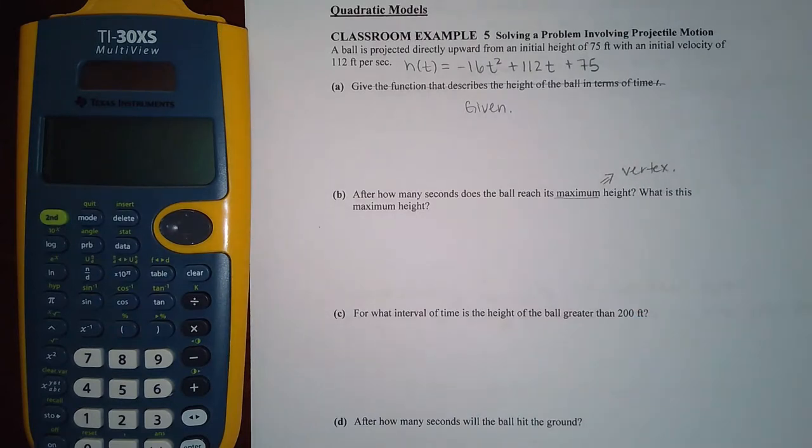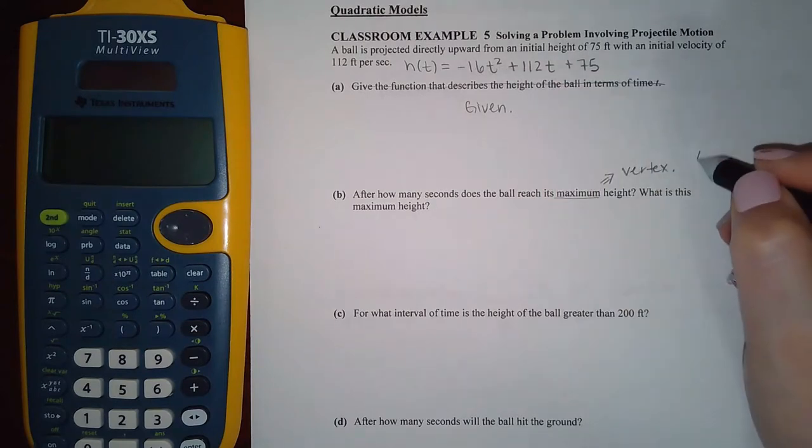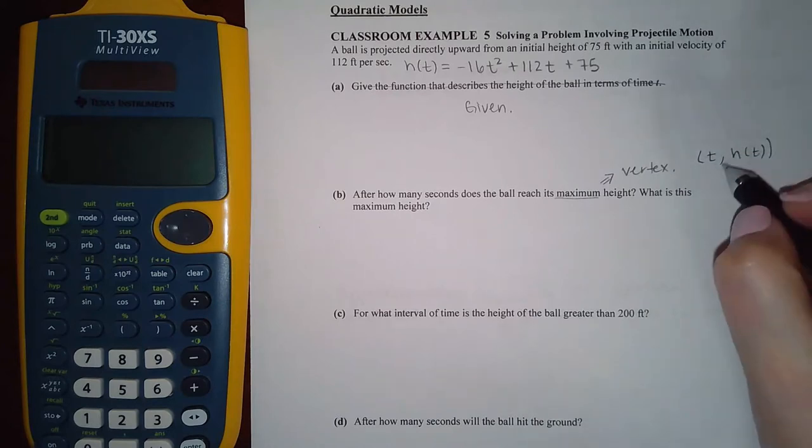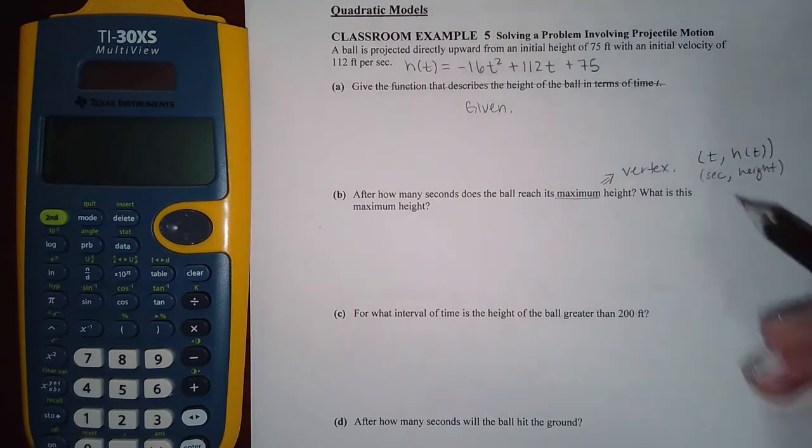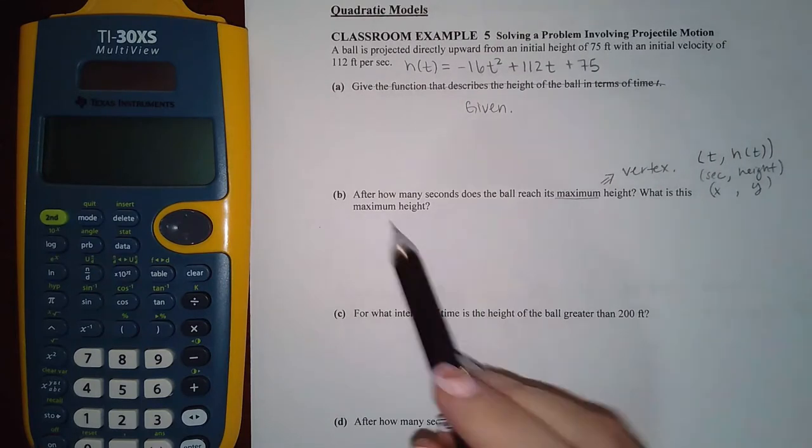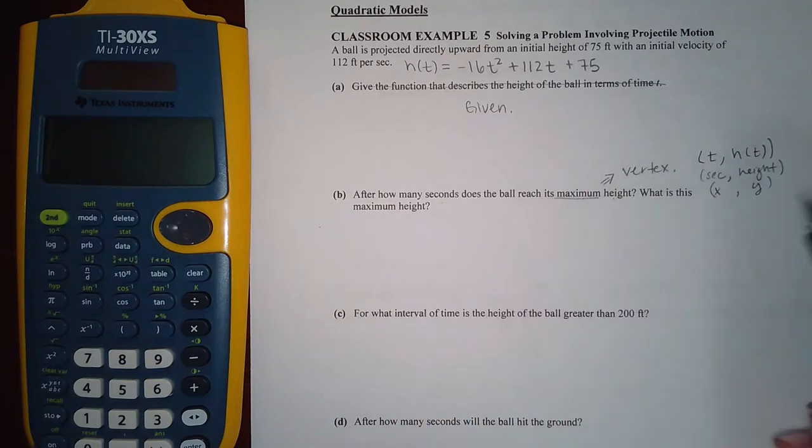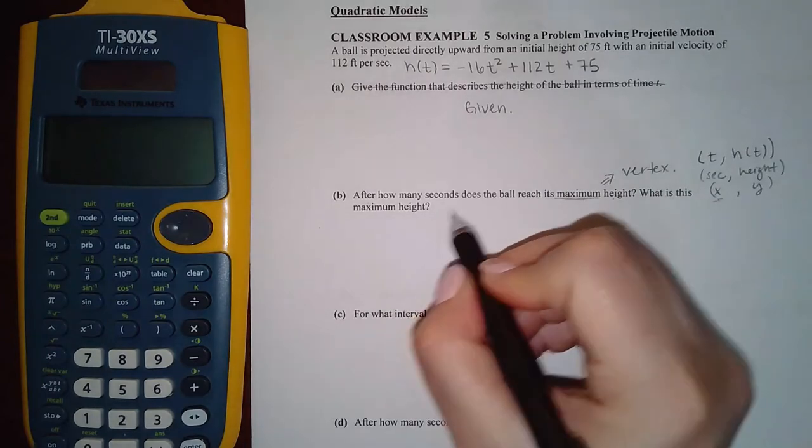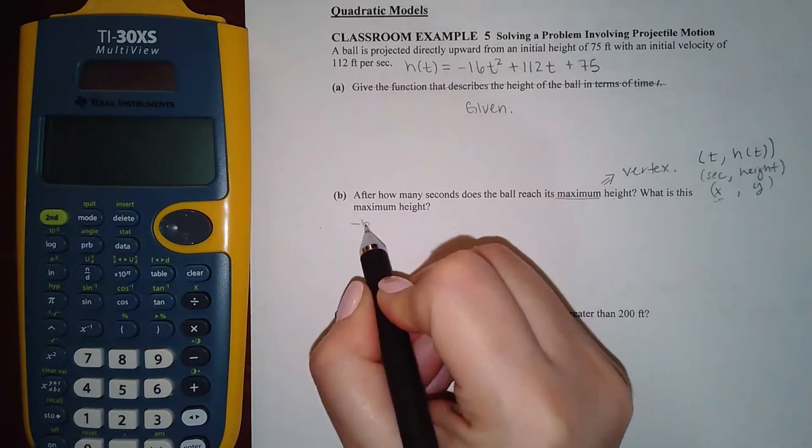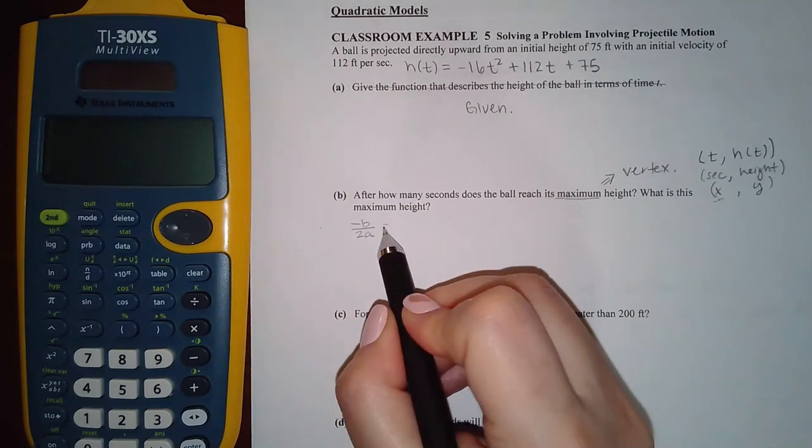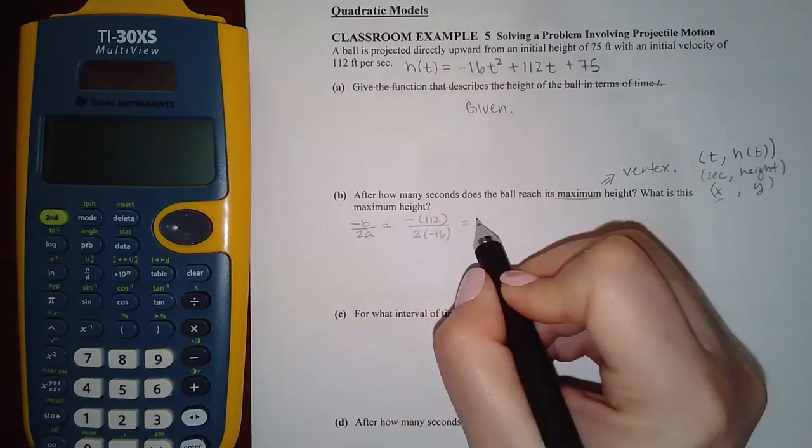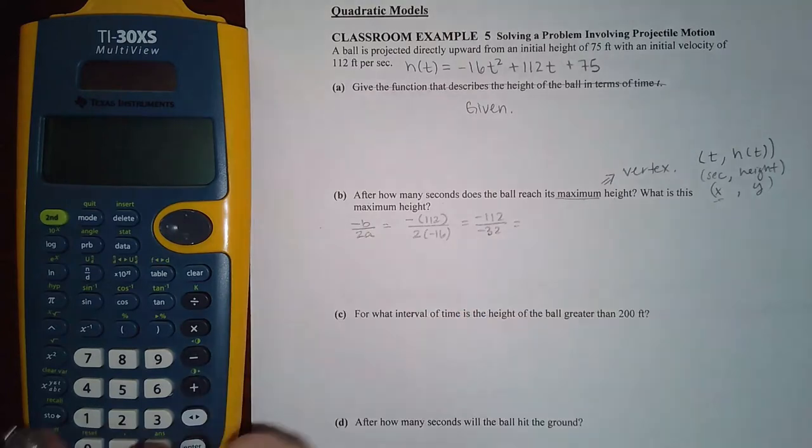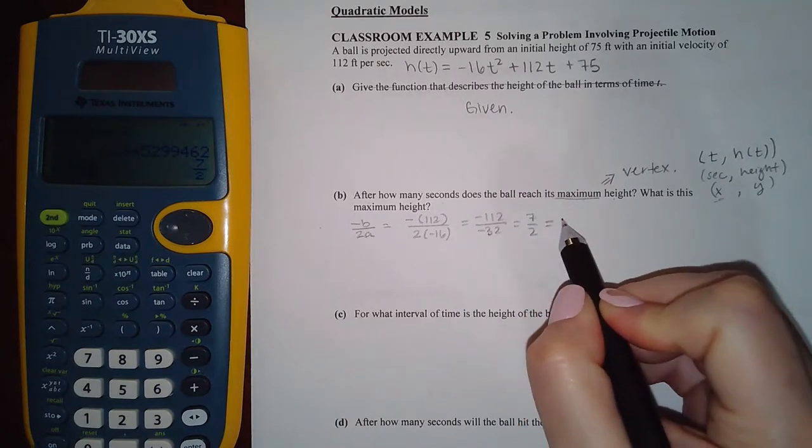They're asking me for this x value and that y value. The first question says after how many seconds does the ball reach the maximum, so the first part's just asking me for the x, and I have a formula to find that x. It's negative b over 2a. If I look at my polynomial here, b is actually a positive 112 and a is a negative 16. So let's see what we get there. We get positive 7 over 2 or 3.5 seconds.